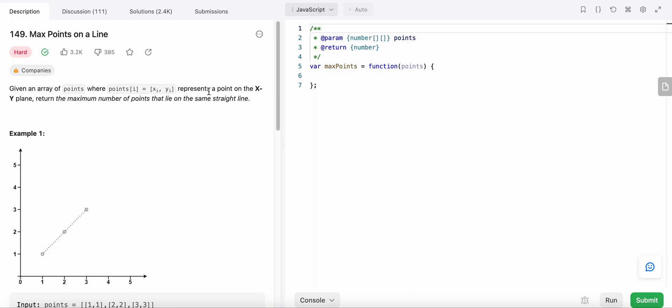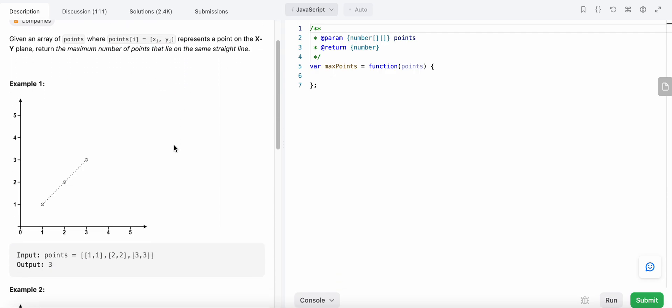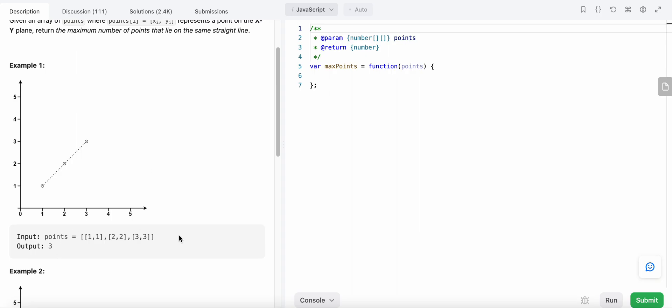of a point in the x-y plane. What we need to find is the maximum number of points in a straight line. Here in this example given below, we have these three points.